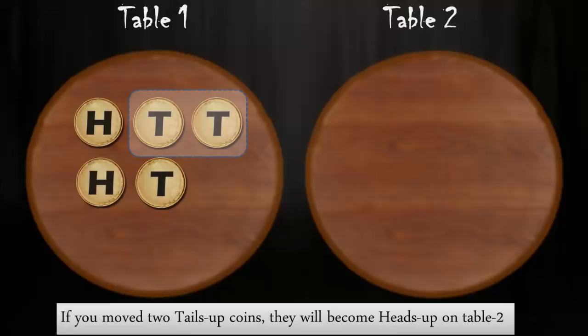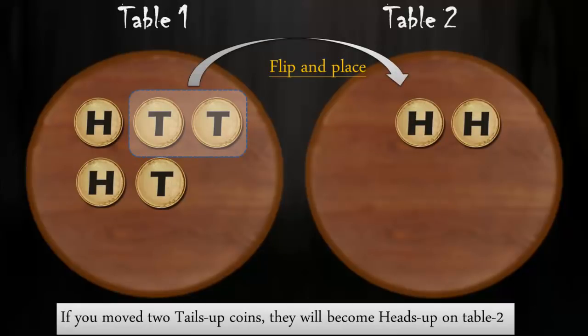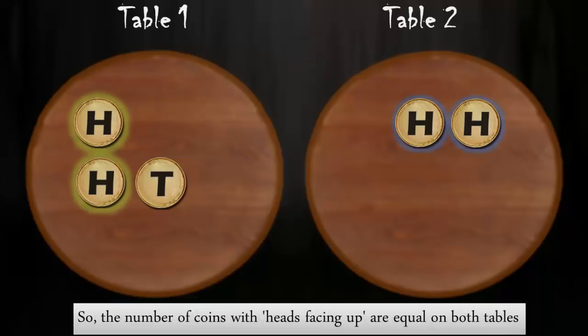If you move two tails up coins, they will become heads up on table 2. So, the number of coins with heads facing up is equal on both tables and that's two.